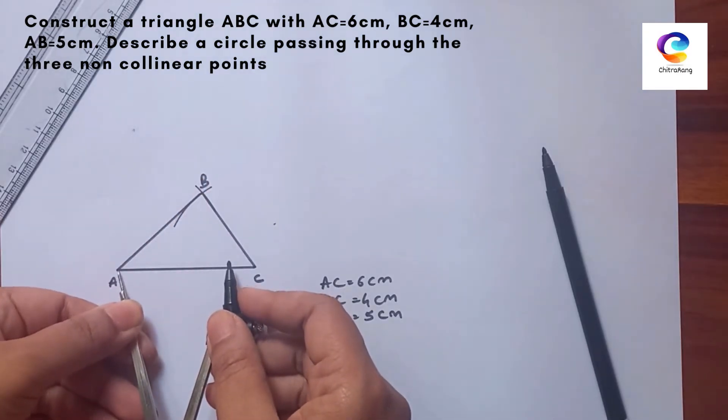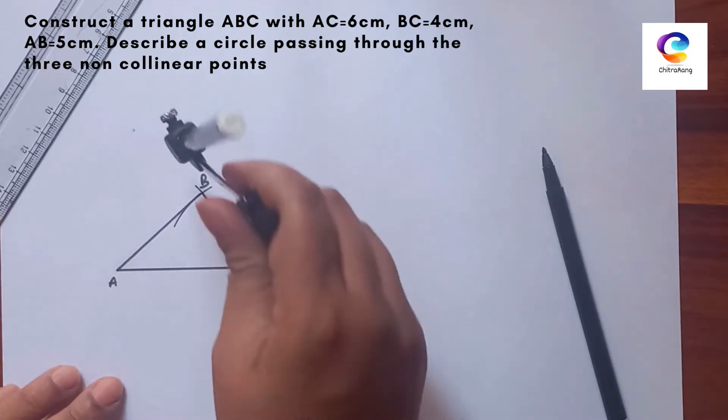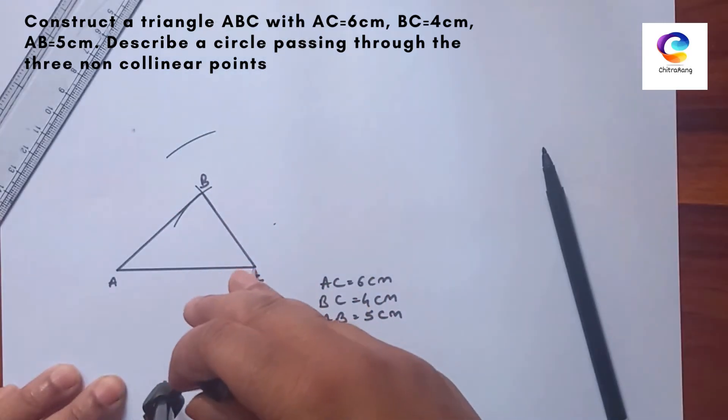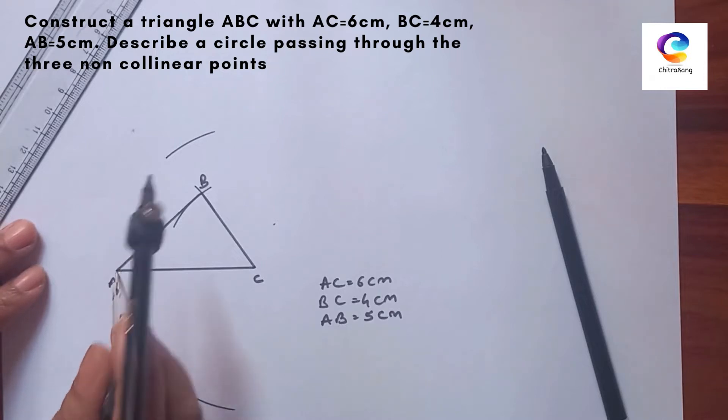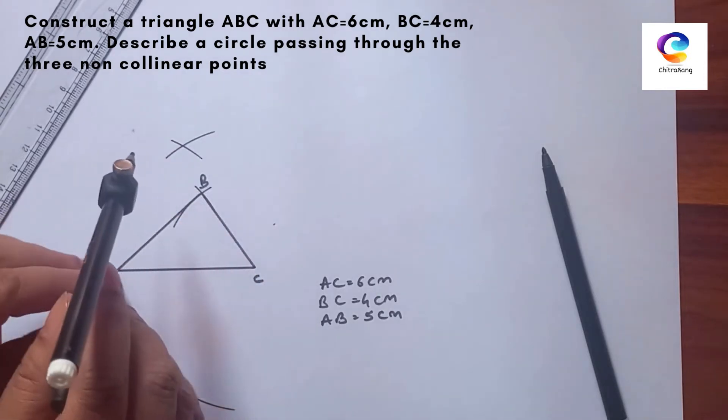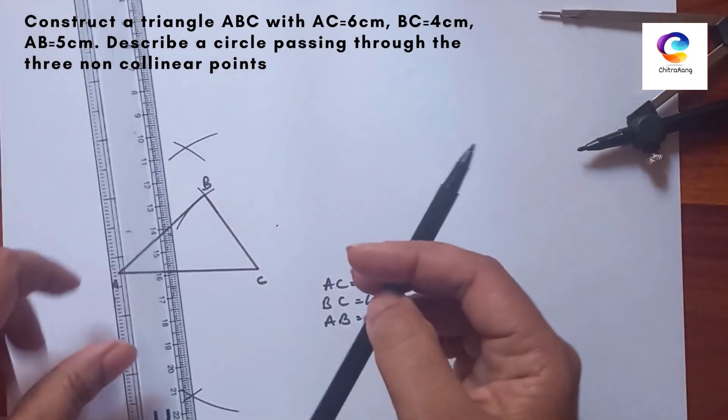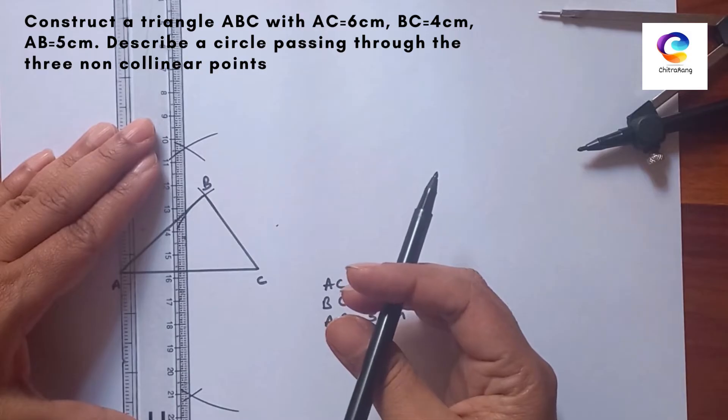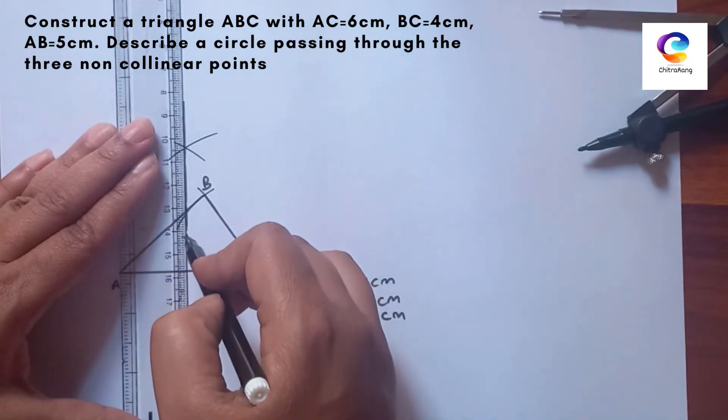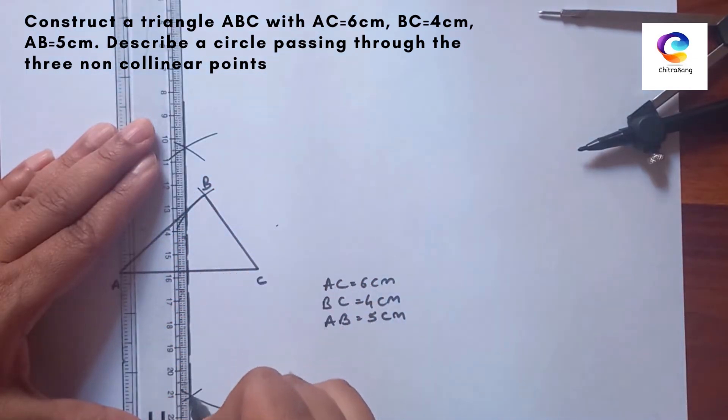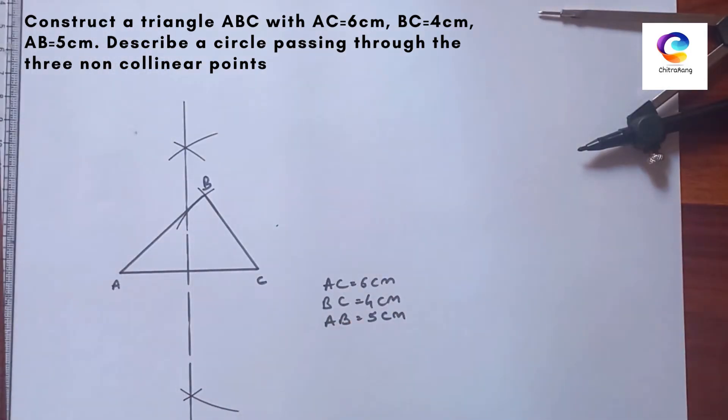For that, we can take a distance AC, and we will draw two arcs, upper and bottom side, from points A and C with the same distance.